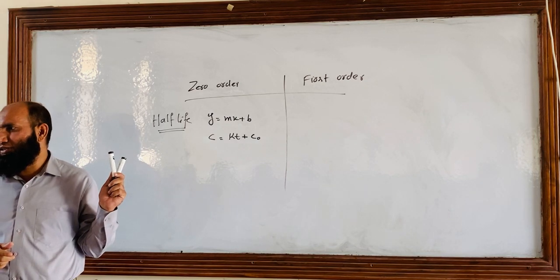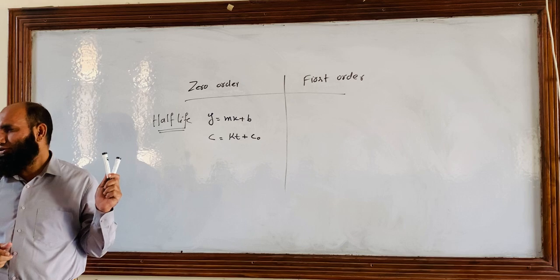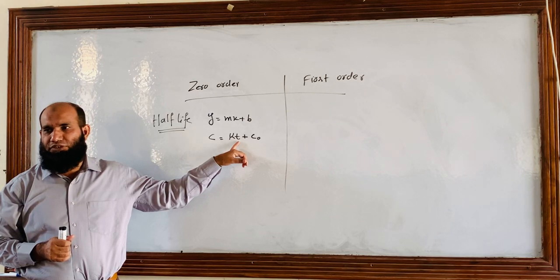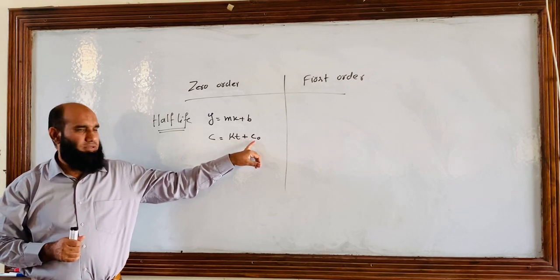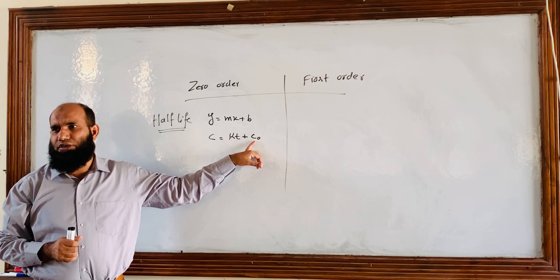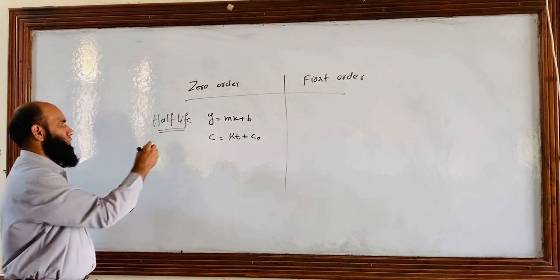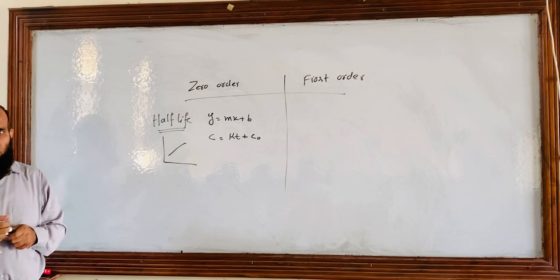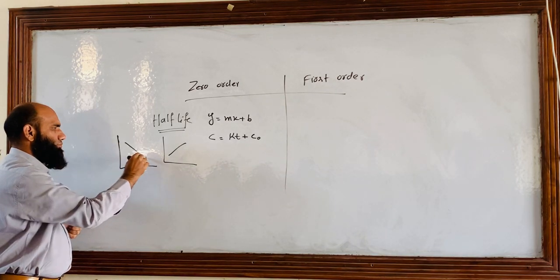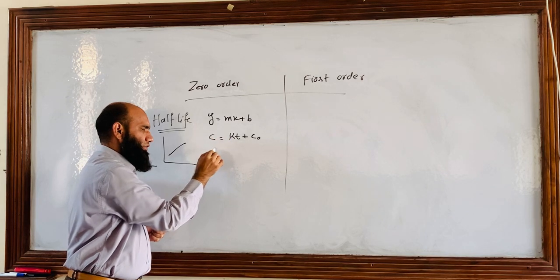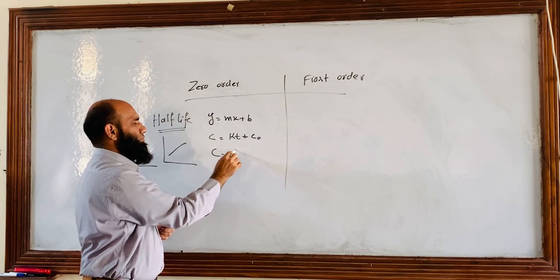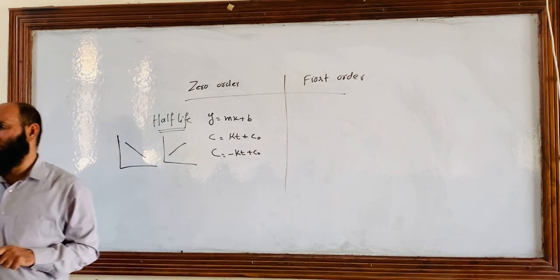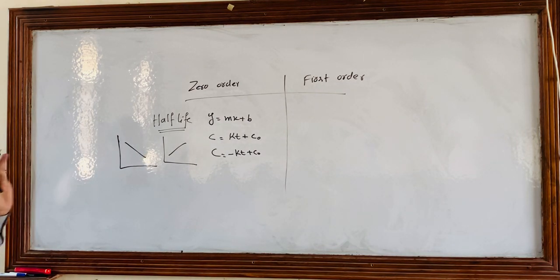In our previous class, we have already modified this equation in the form of C = -kt + C₀. C is the log of concentration, k is the slope, t is the time on the x-axis, and C₀ is the initial log of concentration. The actual equation with a negative slope is C = -kt + C₀. This is the equation for zero order.